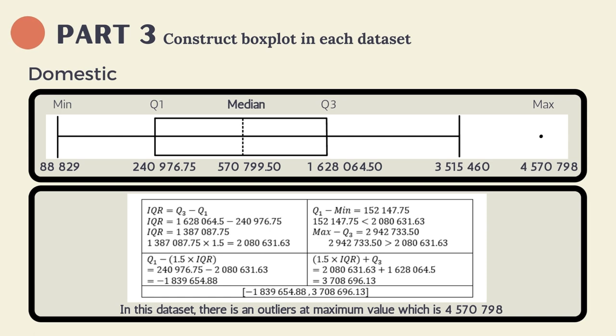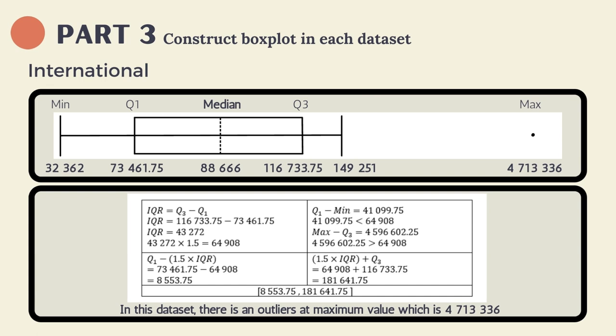Last but not least, this slide constructs the box plot for the international dataset. First, we need to calculate the interquartile range, which is IQR. After calculation, the IQR for international is 23,272. The range of the box plot and its calculation is shown in the slide. For the international dataset, there is also an outlier at the maximum point.